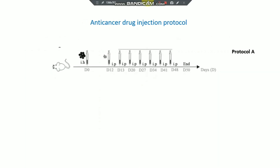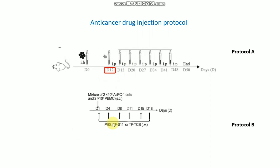For the anti-cancer drug injection protocol, there are different protocols in different publications you can follow — there is no single specific protocol. One common approach is to perform cancer cell injection on Day 0 (D0) and begin drug injection on Day 12 (D12) when a complete tumor has formed. Another protocol starts drug injection after 3 or 4 days. Drug dose can also vary, ranging from 2 mg/kg to 20 mg/kg, and this is variable across publications.